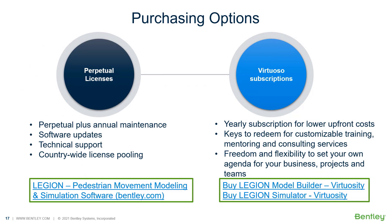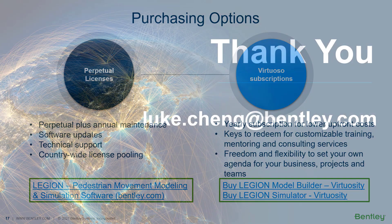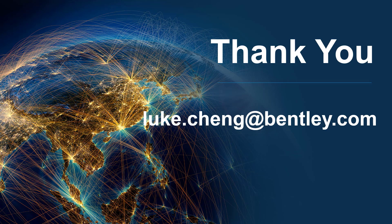Finally, how to buy Legion. Bentley offers Legion in two ways. One is a traditional way of providing a perpetual license and annual maintenance. In this case, users will own and always be able to use their Legion license. With annual maintenance, users will receive upgrades and technical support. Another way to acquire Legion is through Bentley's wholly owned subsidiary, Virtuosity — an e-commerce company selling most of Bentley's products. Through Virtuosity, Legion can be purchased through yearly subscription online at a much reduced price compared to buying a perpetual license. If you have any questions about these two options or about Legion in general, please feel free to contact me at luke.cheng@bentley.com.